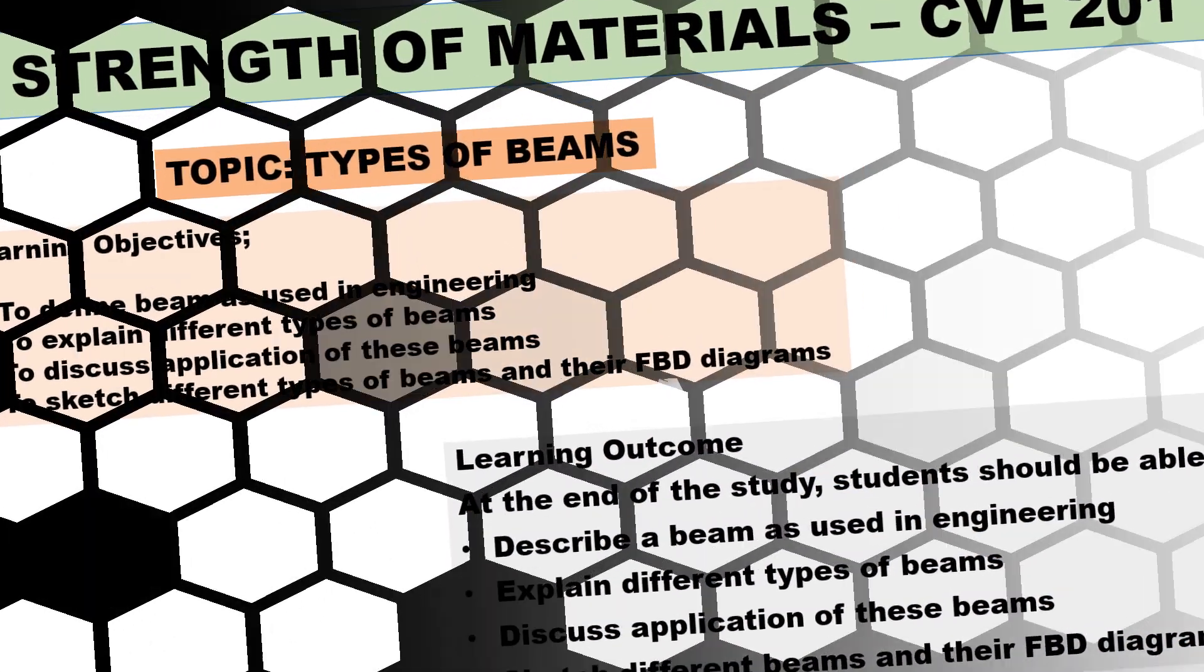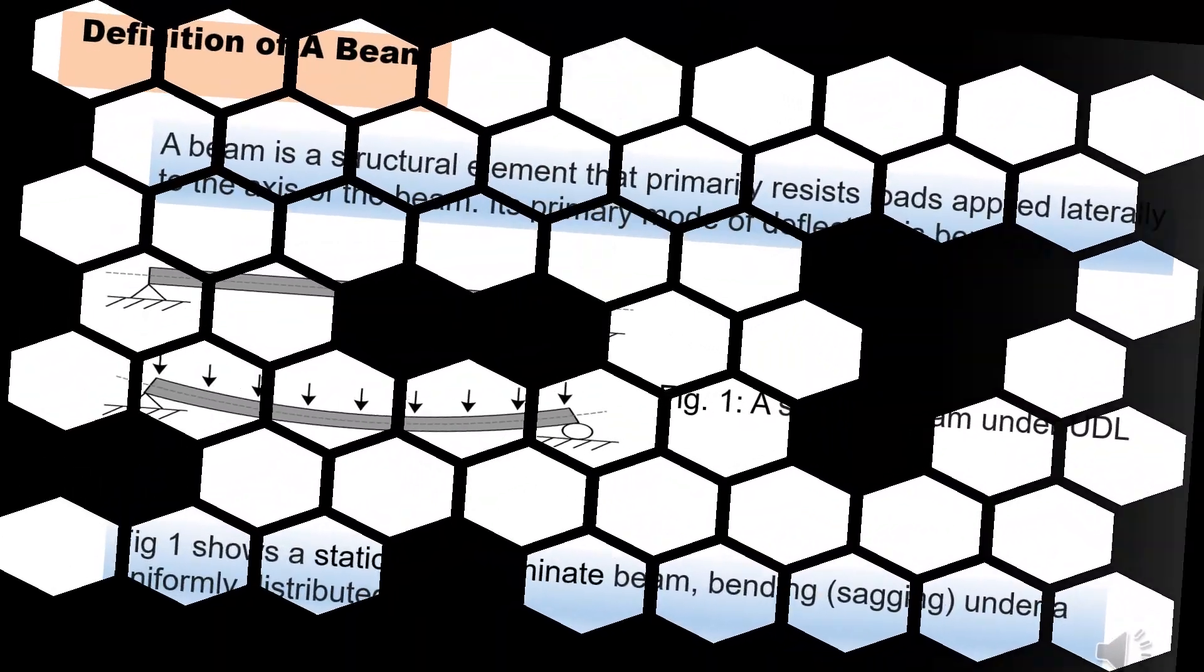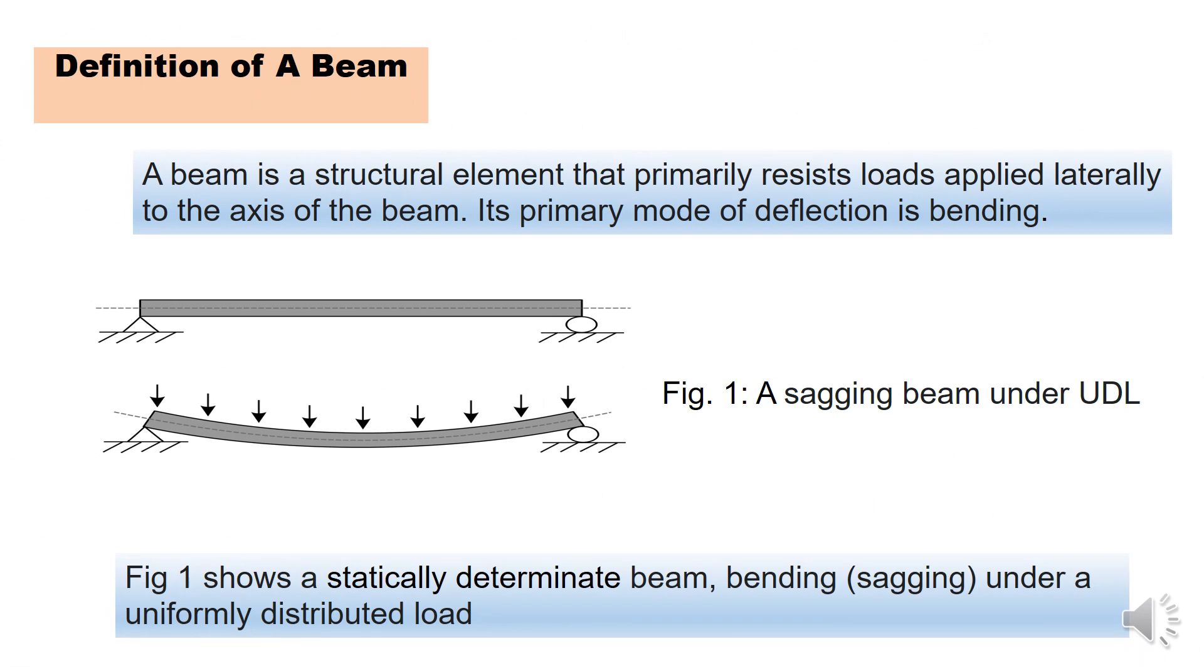Let's get into today's business definition. A beam is a structural element that resists lateral loads, or you can say structural element that primarily resists loads applied laterally to the axis of the beam.